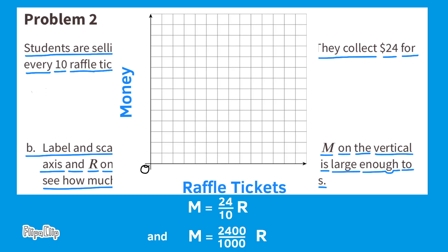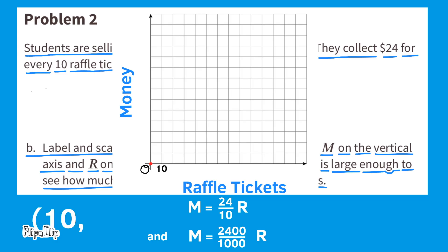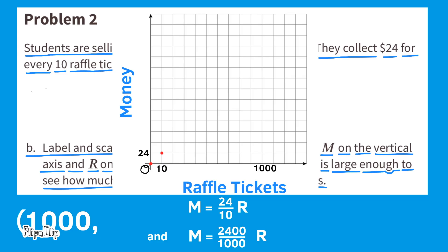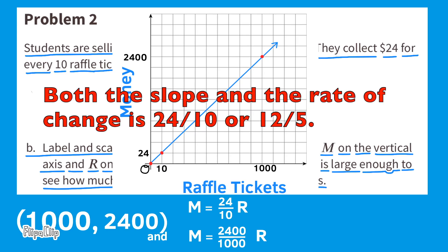I'll label the origin — the zero value for both x and y. According to the formula, M is always 24/10 times larger than R, meaning the y-value is always 24/10 times the x-value. If x equals 10, then y equals 24 — giving the ordered pair (10, 24). I'll plot that point. Going straight to 1,000 tickets: x is 1,000 and y is 2,400. I've plotted those points and can now draw the line. The slope and rate of change is 24/10, or 12/5.